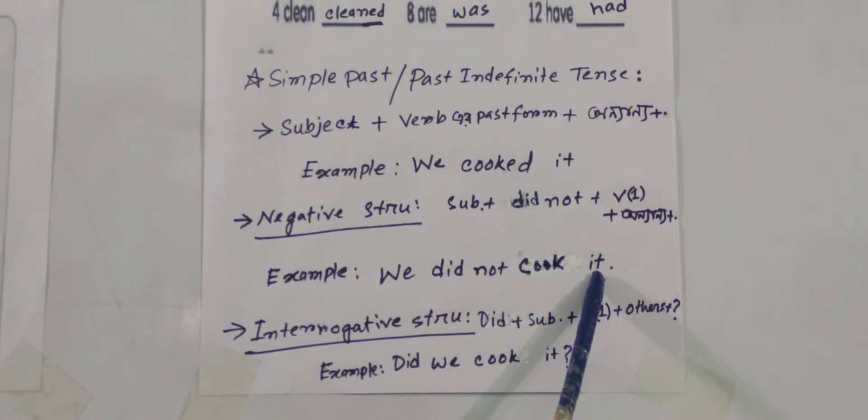For negative structure, it's: Subject plus did not plus verb present form plus object. Example: We did not cook it. Note that in negative sentences, we use did not with the present form of the verb, not the past form.